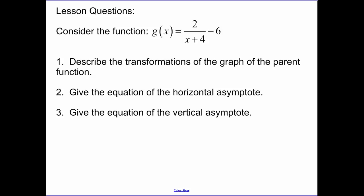Shorter lesson today. There are your lesson questions. Describe the transformations. I'll give you a hint. There's more than one. You have to give me all of them and give me the equation of the horizontal asymptote. Remember, it's a line and the vertical asymptote. Make sure you give me the equation of a line.